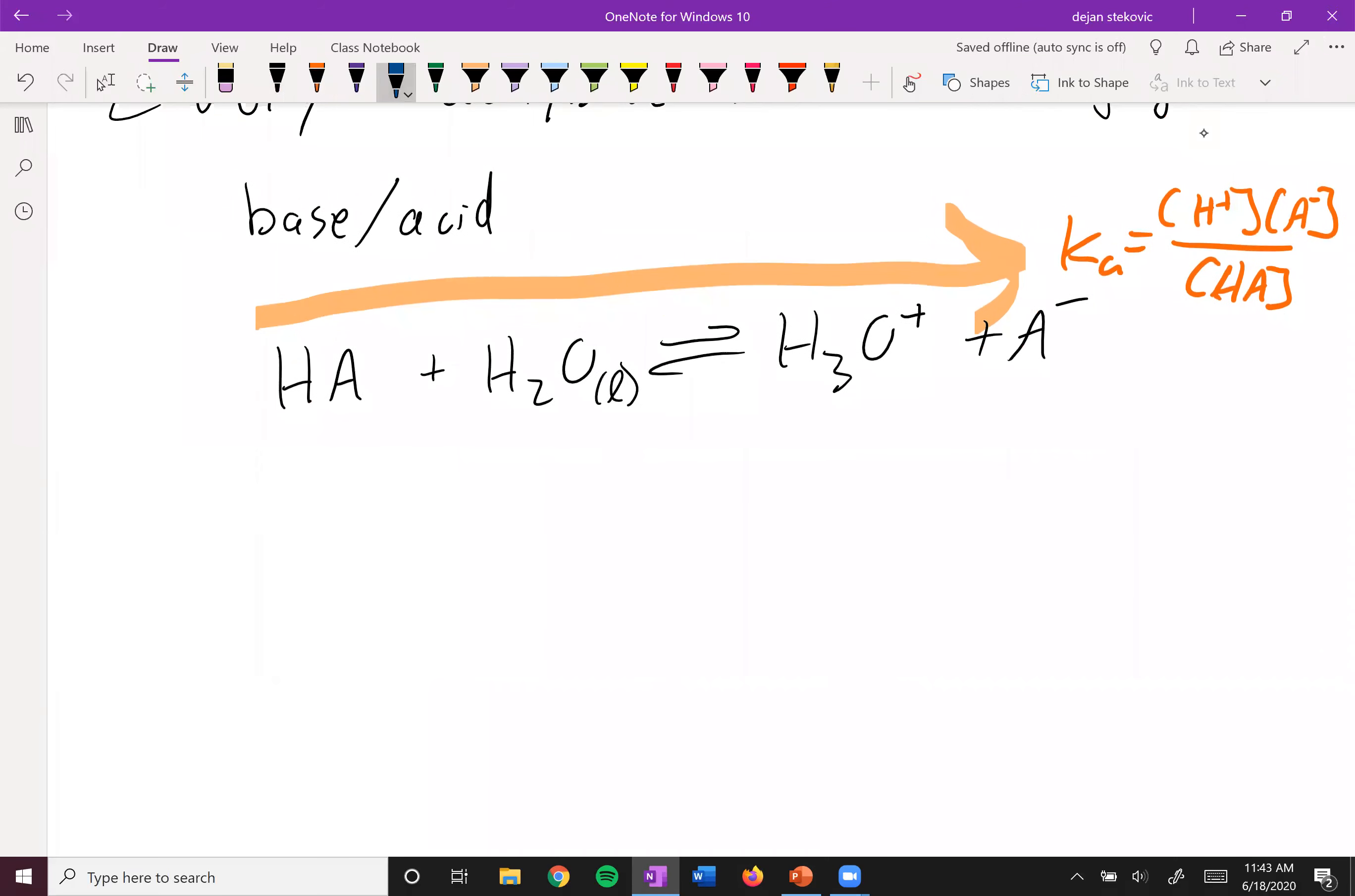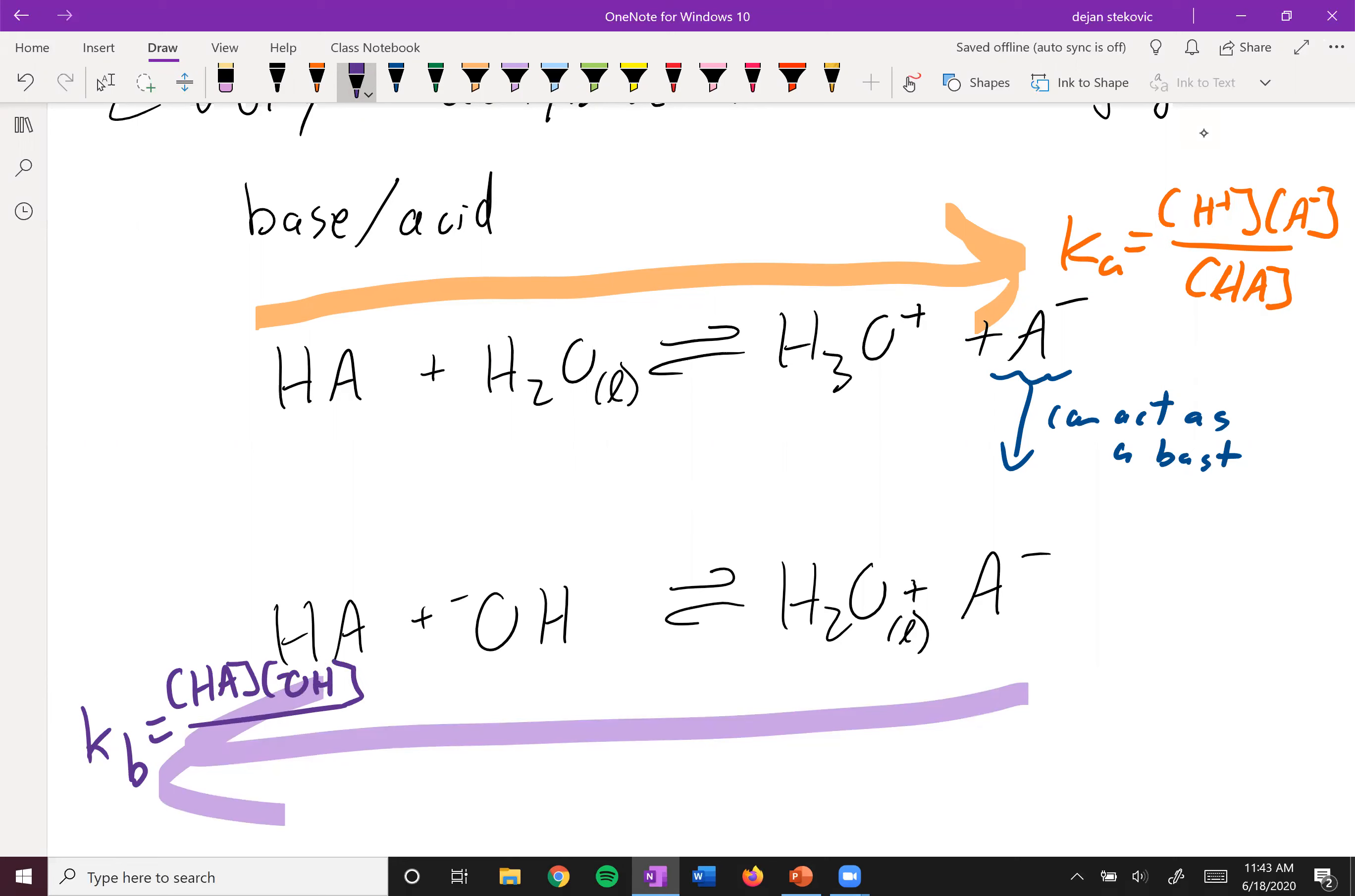However, this A minus can act as a base. It's the conjugate base, so it can act as a base. So this A minus maybe interacts with a different water to form HA and hydroxide. Now we're talking about going in this direction, and so we can write a KB for this, where it's going to be equal to the concentration of HA times hydroxide all over A minus.